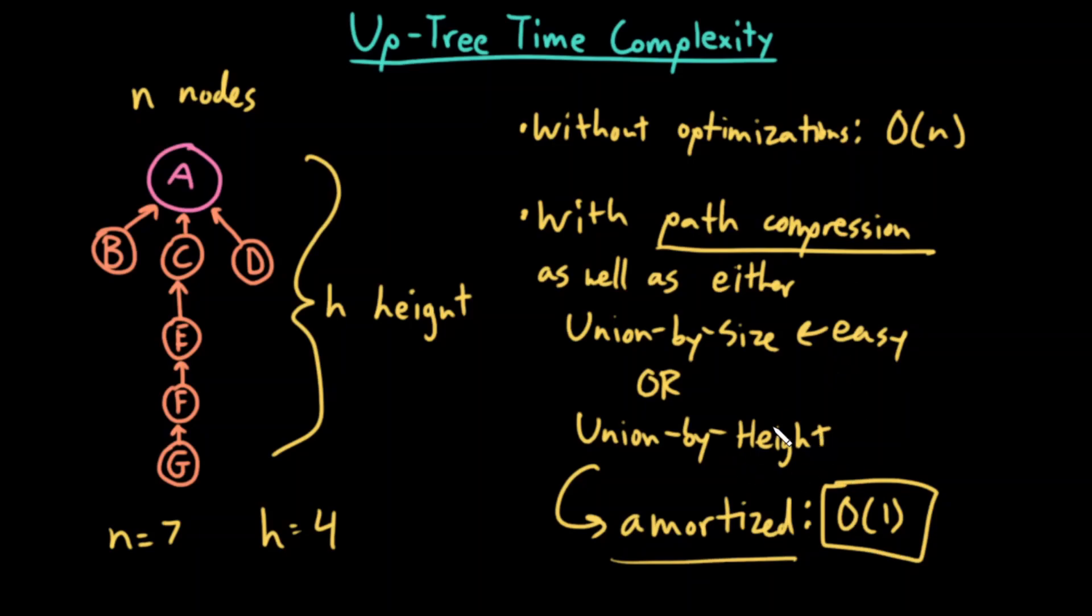Whereas union by height, well if we're doing path compression the heights of the different nodes in our tree, you know it changes pretty frequently, so this might be a little harder to implement. So in practice this is generally considered the better option just because it's easier to implement and still with path compression we'll have amortized constant time find and therefore union operations.